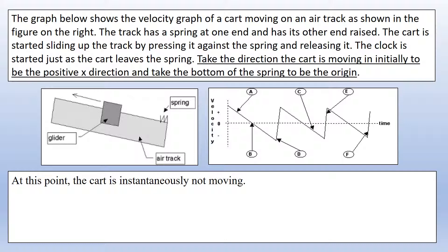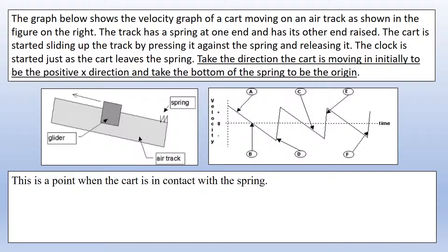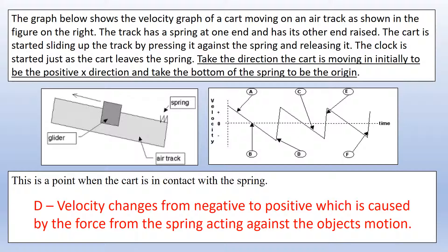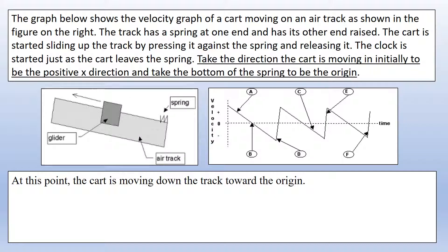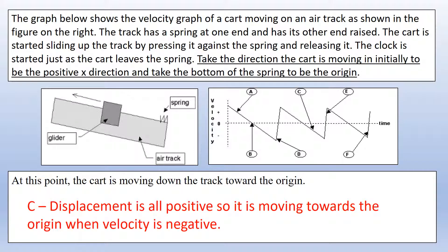Point B also answers the question of where the cart is not moving, since velocity is zero there. The cart is in contact with the spring at point D, where there's a rapid change from negative velocity to positive velocity — the spring causes the object to reverse direction, going from moving down the slope back up again.